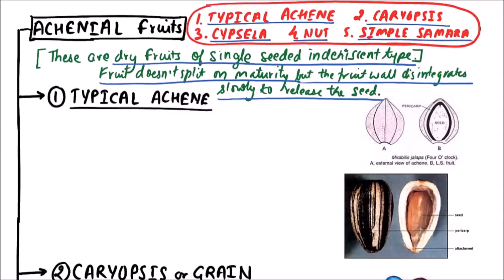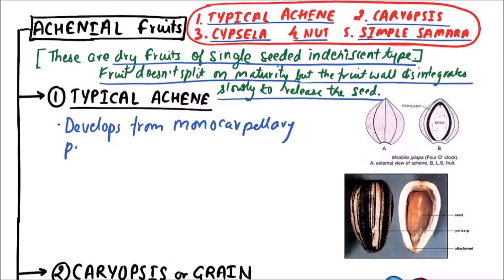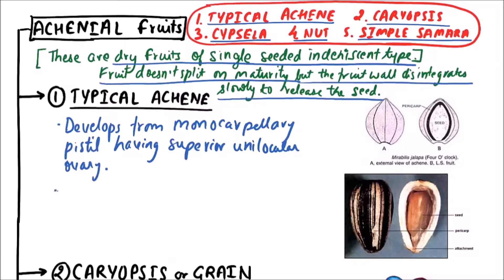First, we'll discuss the typical achene. A typical achene develops from a monocarpillary pistil having a superior unilocular ovary. It's important to note that the pericarp is attached to the seed at only one point.